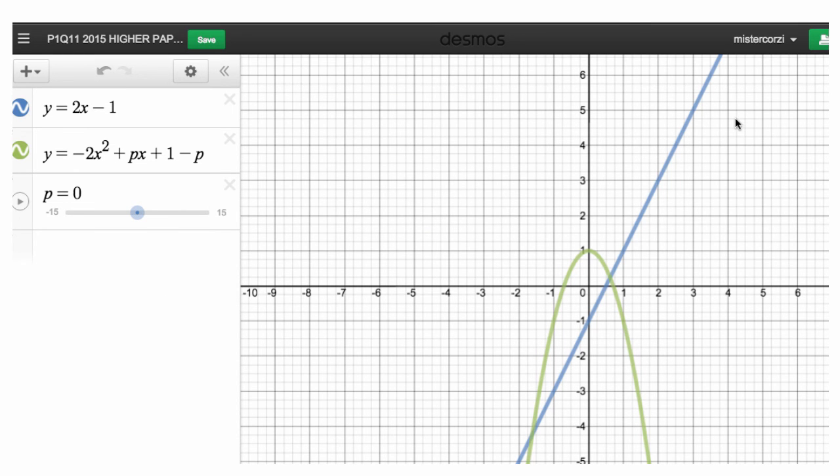So here's the situation we had. This line y = 2x - 1, gradient of 2. If you go 1 along, you go 2 up, crossing the y-axis at -1. So that was the line that we're wanting to be a tangent to this parabola. Now over here, I've put in the equation -2x² + px + 1 - p and I'm initially starting off my value of p at 0, which means we're seeing the parabola -2x² + 1. And as I start increasing the values of p, I'll get different parabolas.